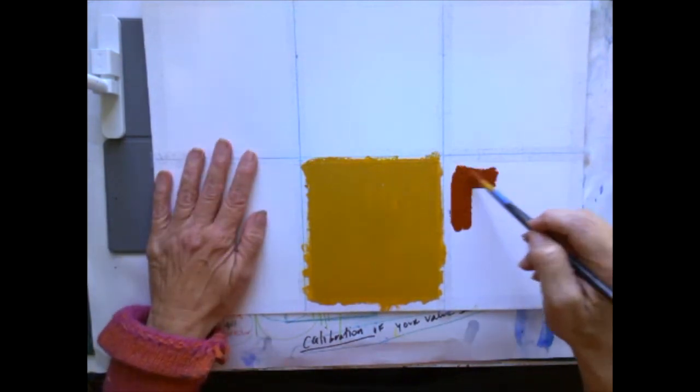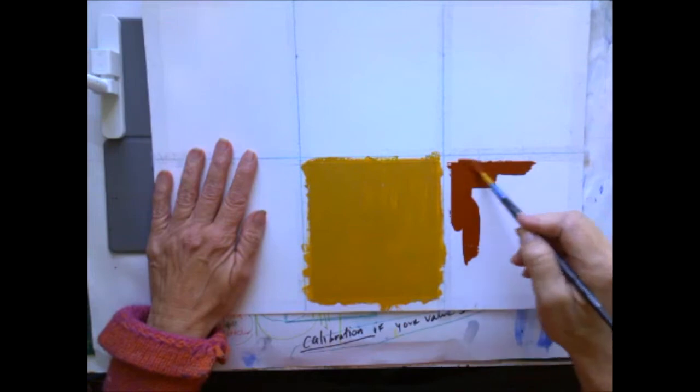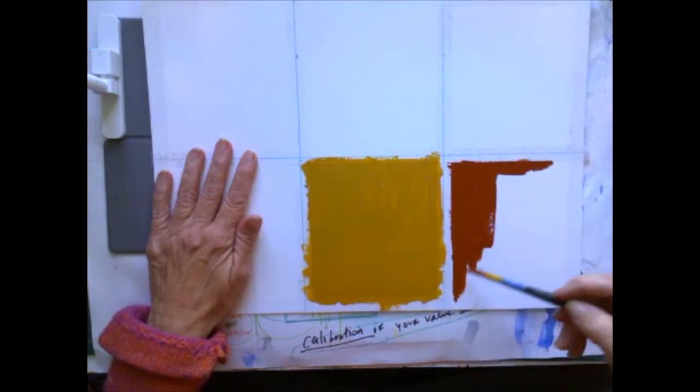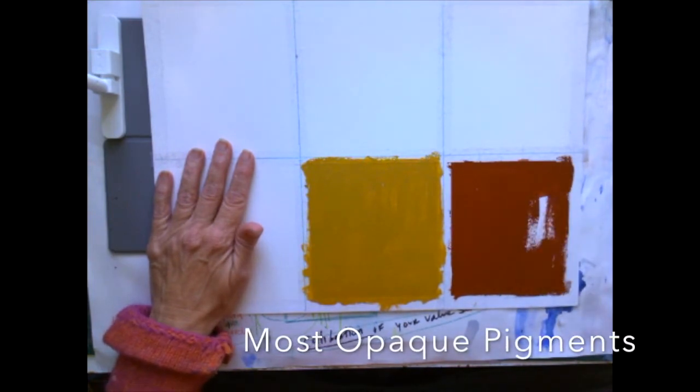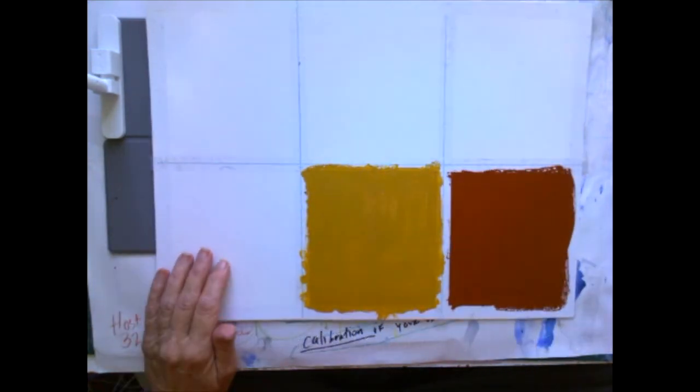This is the ochre, and I would call this red, either red ochre or iron red or Mars red. These are two of our most opaque pigments of this set.